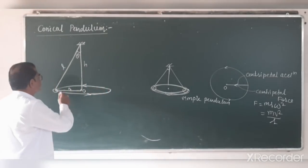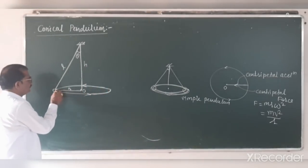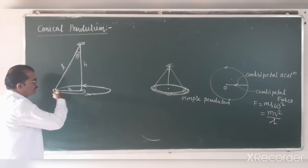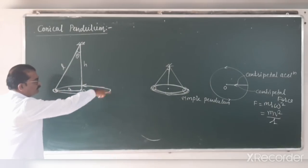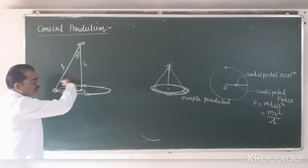See in the figure here — this is the mass or the bob which will be revolved in a horizontal plane in a circular path.